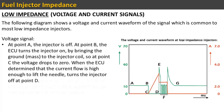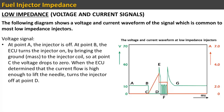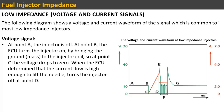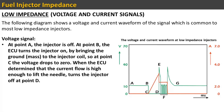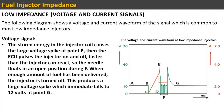The following diagram shows a voltage and current waveform of the signal common to most low impedance injectors. Voltage signal: At point A the injector is off. At point B the ECU turns the injector on by bringing the ground to the injector coil, so at point C the voltage drops to zero. When the ECU determines that the current flow is high enough to lift the needle, it turns the injector off at point D. The stored energy in the injector coil causes a large voltage spike at point E. Then the ECU pulses the injector on and off faster than the injector can react, so the needle floats in an open position during F. When enough fuel has been delivered, the injector is turned off, producing a large voltage spike which immediately falls to 12 volts at point G.